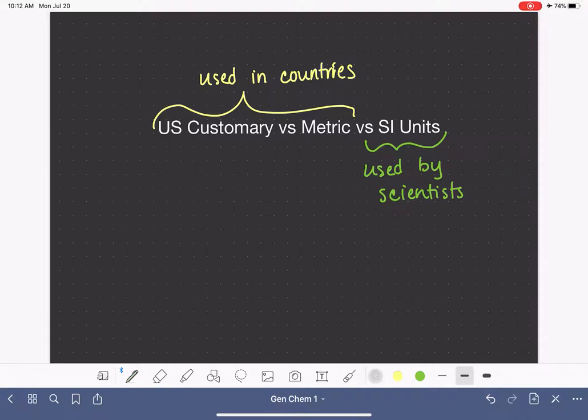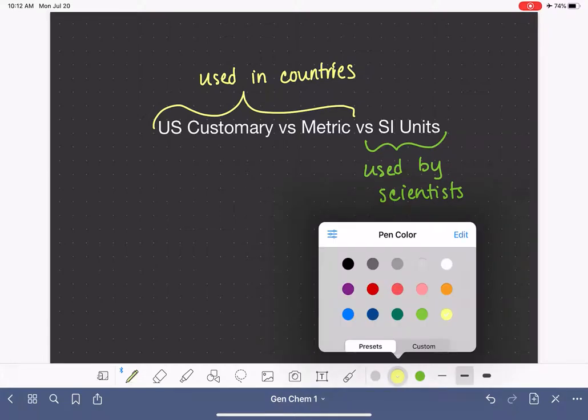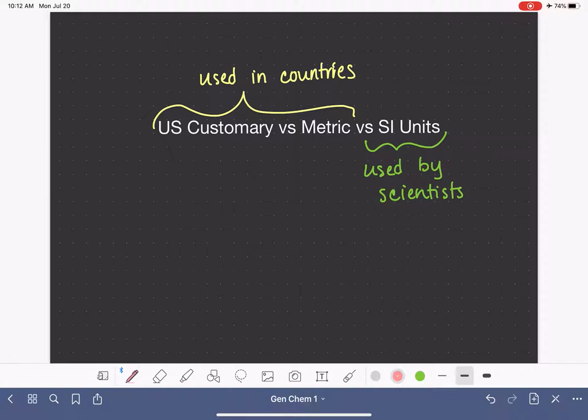The U.S. customary is the system of measurement units that we use in everyday general American society. For example, we express our distances in miles, or if we're talking about a smaller distance like the height of a person, we would use feet or inches. We express our masses in pounds or ounces if it's smaller.